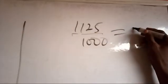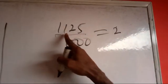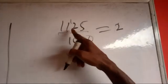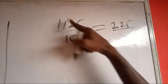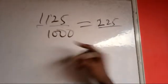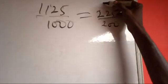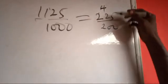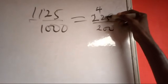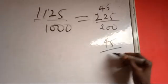5 goes into 11 that's 2 remainder 1, bring down make 12, 5 goes into 12 that's 2 remainder 2, bring down make 25, 5 goes into 25 that's 5. Therefore we're having 225. Now 5 goes into 1000, we are going to be having, 5 goes into 10 that's 2 remainder 0, so we have 200. Therefore we have 45 over, 5 goes into 40, I think we'll be having 8.